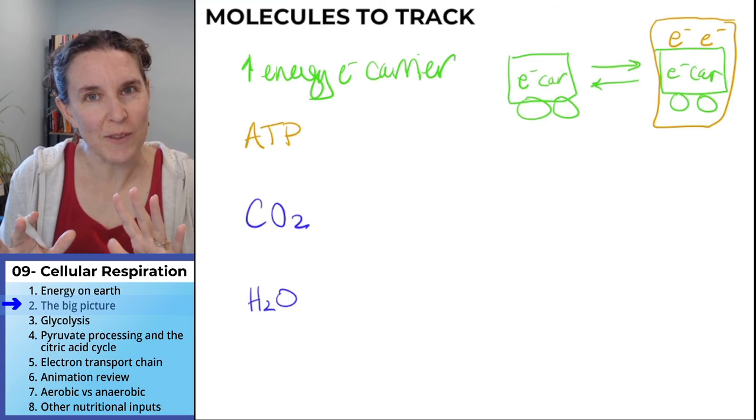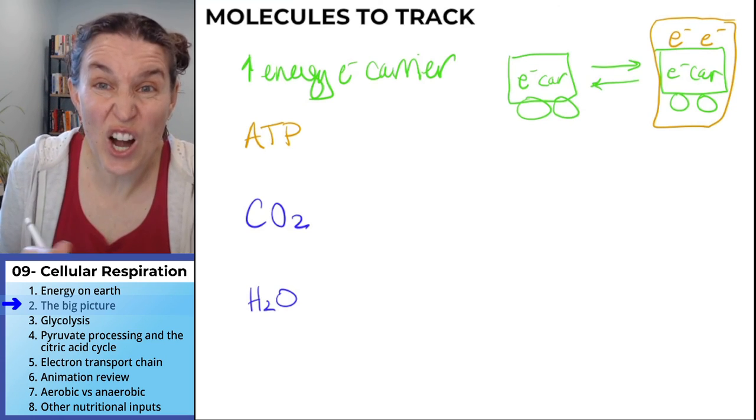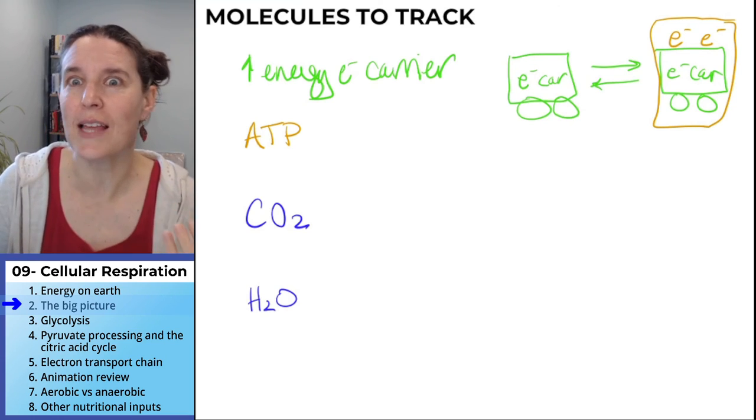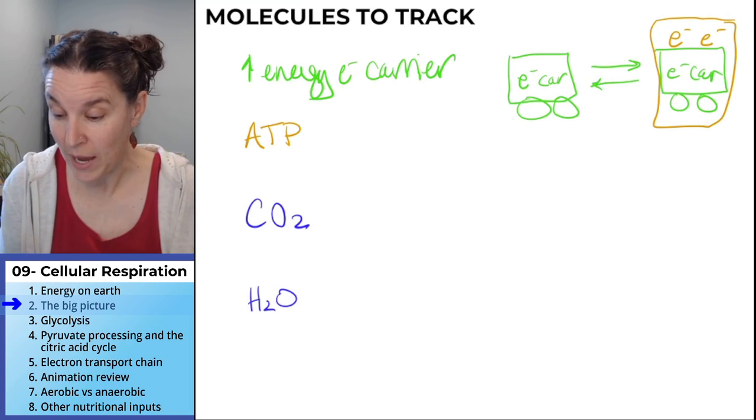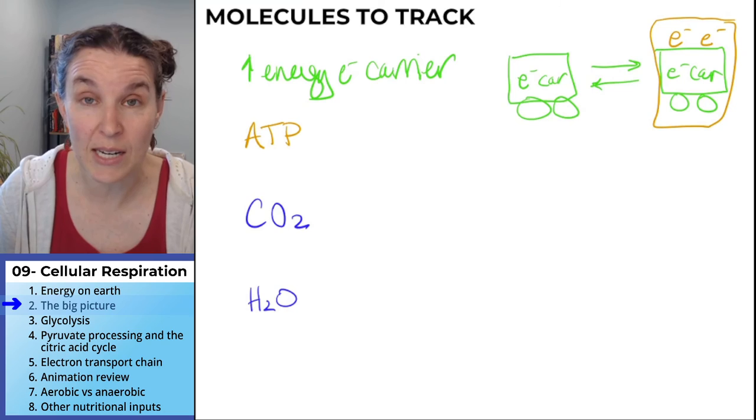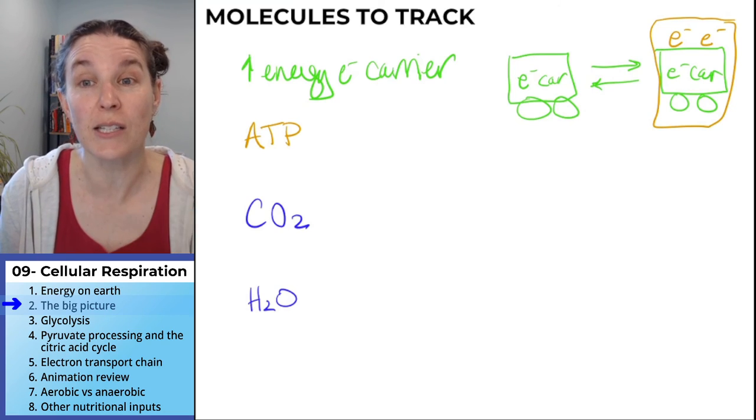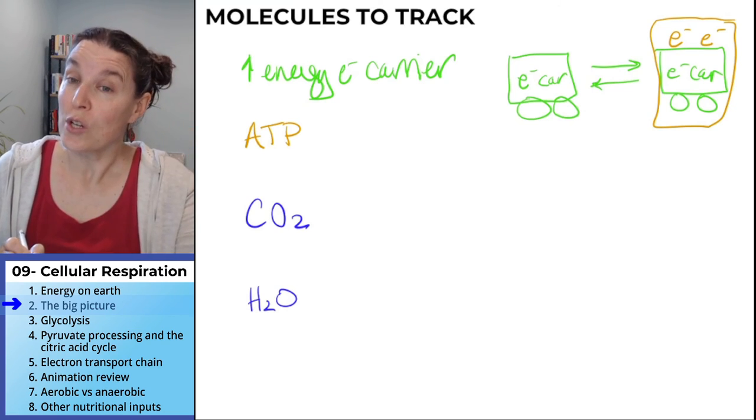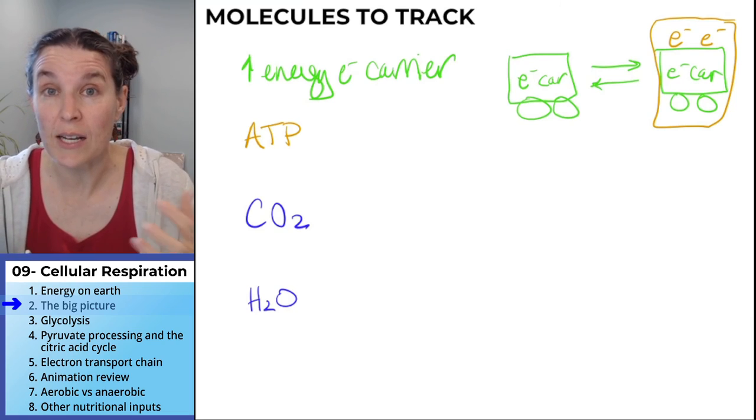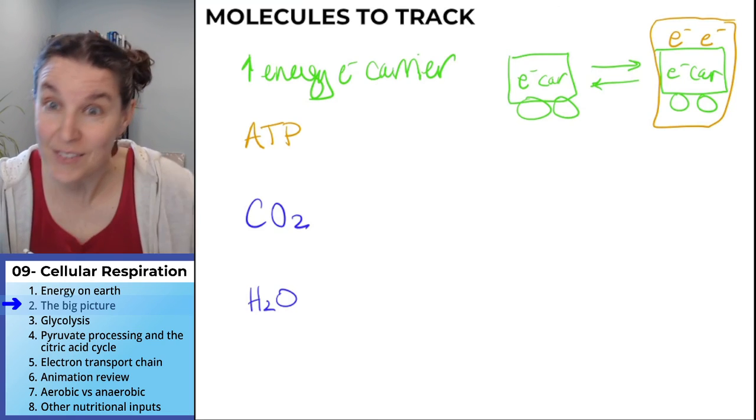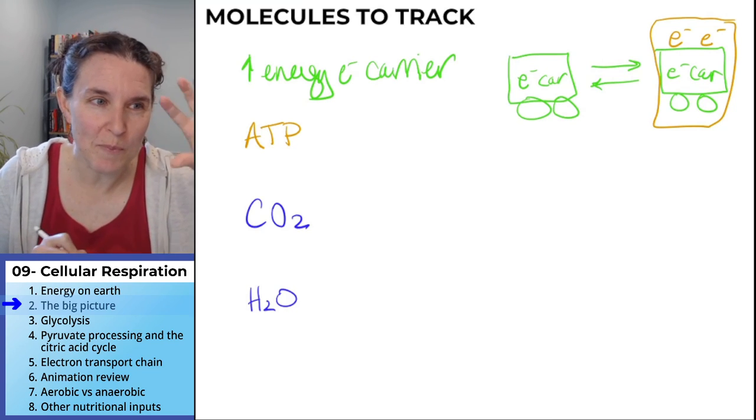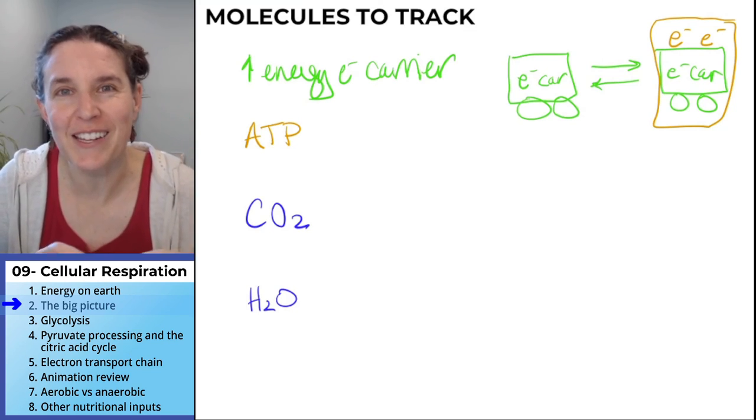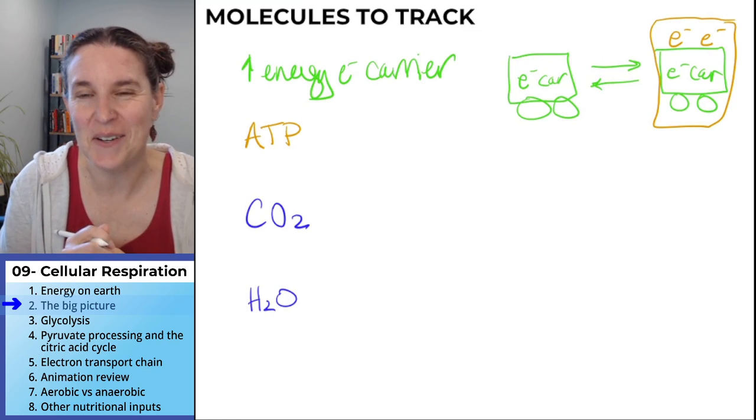Are you comfortable with that? If the car gives up the electrons, lets the passengers out of the car, then it goes back to being an empty car. And it's ready to carry two more high energy electrons, which likely will be generated from the process of cellular respiration. Either glycolysis, the processing of pyruvate, or the citric acid cycle.